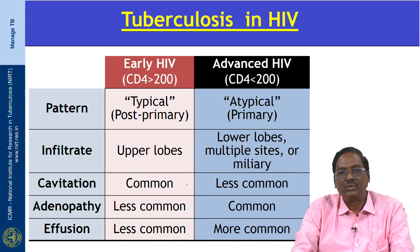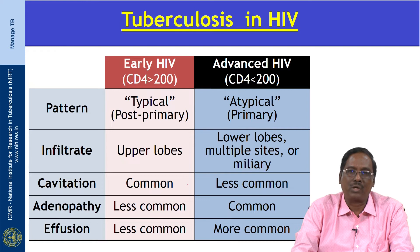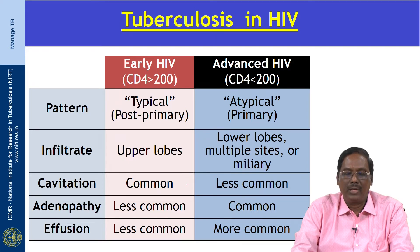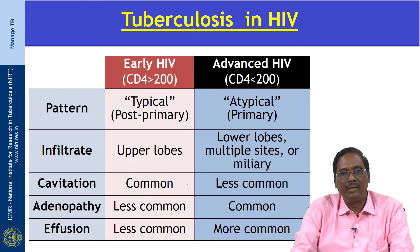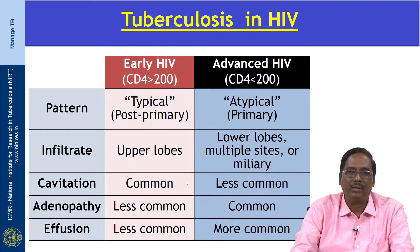Tuberculosis is the most common opportunistic infection affecting HIV-positive patients and remains the most common cause of death in patients with HIV. HIV-TB can occur in any stage of HIV, but the radiological pattern of TB in HIV depends on the immune status of the patient and CD4 count.